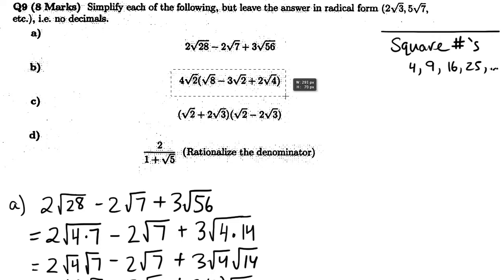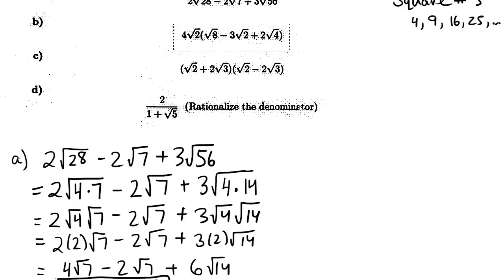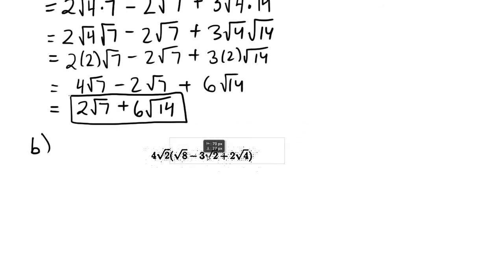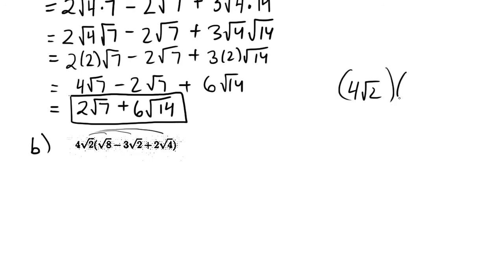I'll just copy it here. What happens with this one? Well, we're going to distribute this across. Remember, when you multiply, like, if I have something like 4 root 2 times 3 root 2, what you do is you multiply these numbers together, and then you multiply the numbers under the roots together. So in this case, it would be 4 times 3 is 12, and then 2 times 2 is 4.